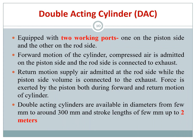Now we look at the double acting cylinder, or DAC, compared to the single acting cylinder, or SAC. In a double acting cylinder there are two working ports instead of one. There is no spring — to extend you supply air at one port, and to retract you supply air at the opposite port.